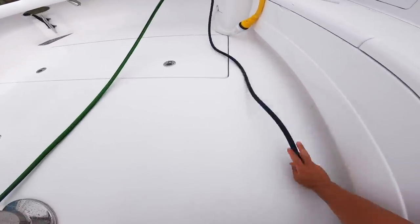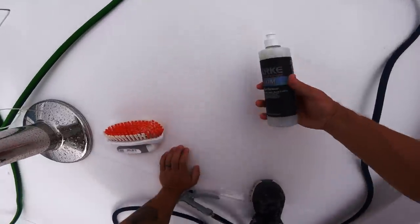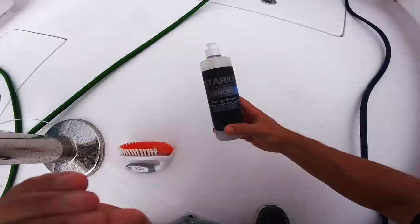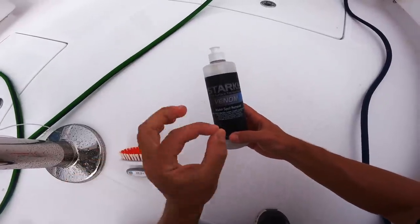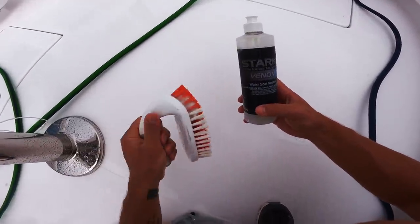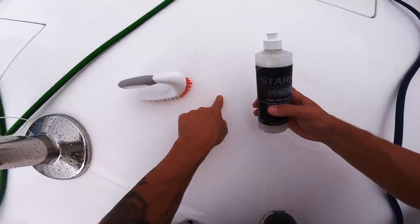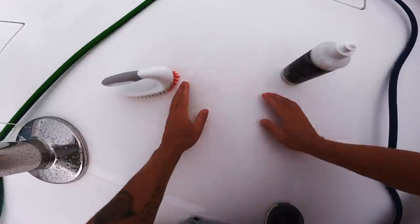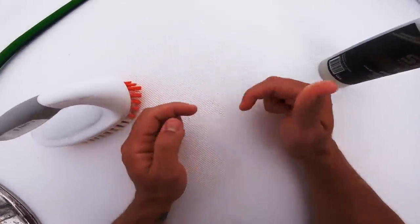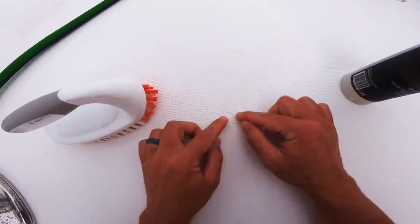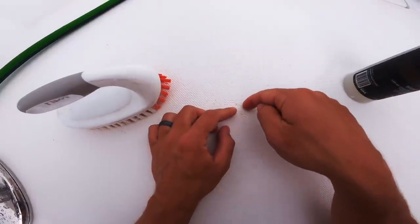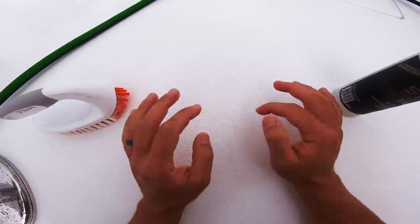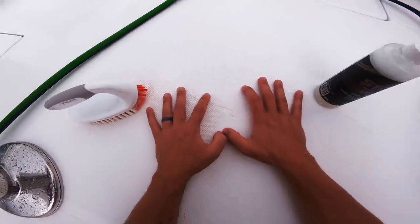Alright, just get a nice clear working space. So the very first thing we're going to do is we're going to grab some Stark Venom water spot remover. This will take off the metal stain, but we're also going to have to use the scrub brush to be able to get inside of the grain to be able to actually remove the metal shave. So what this actually is, guys, it is little specks of metal that's stuck into the gel coat.